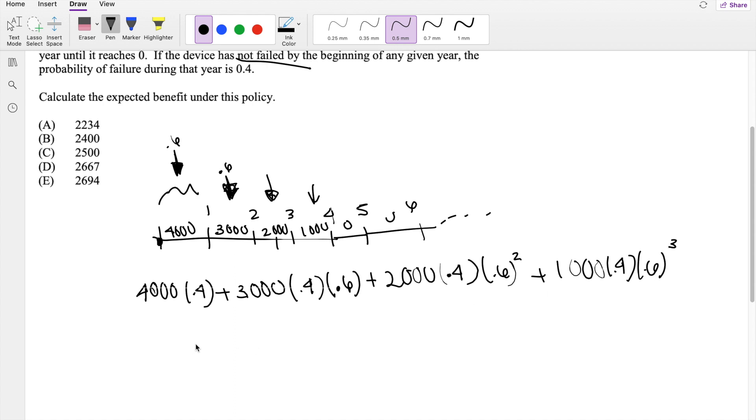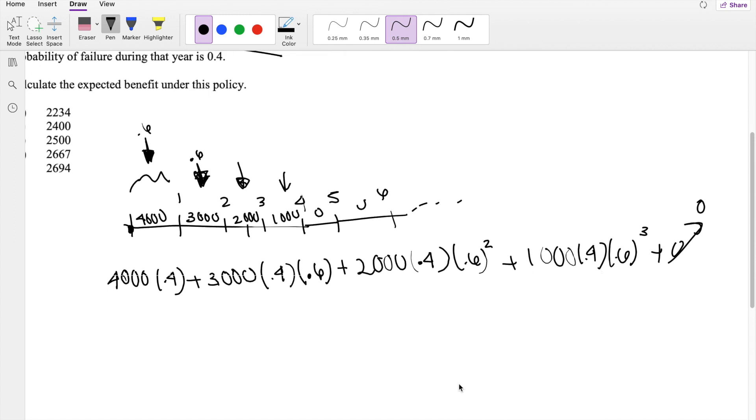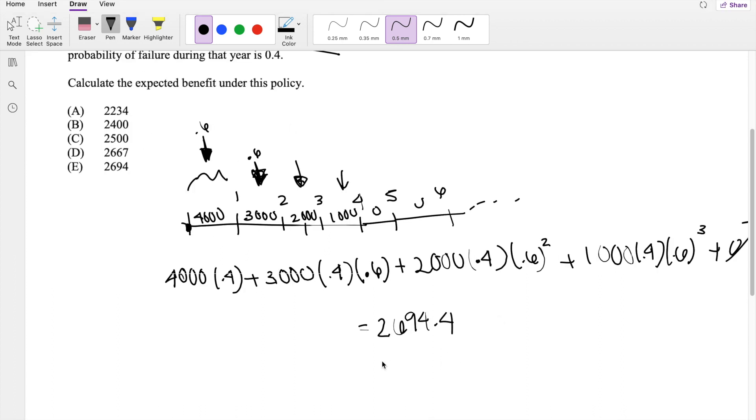And adding all this up. And then the rest here is going to be just 0. Anything times 0 is just going to be 0. So everything, the rest is just 0. So right here, this is equal to 2694.4, which is approximately equal to 2694, or answer E.